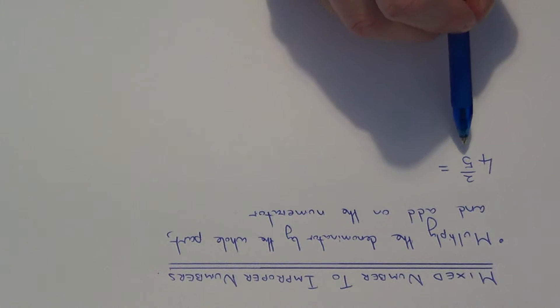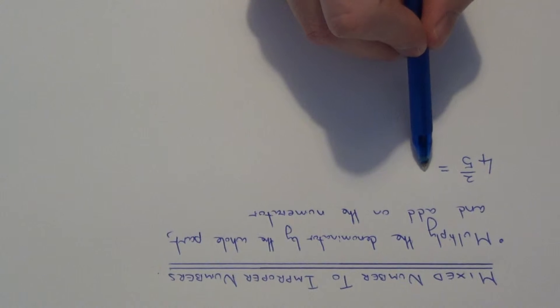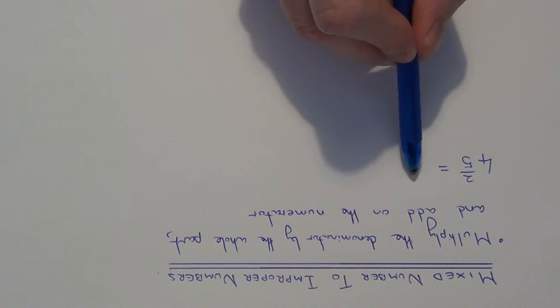To change your mixed number into an improper fraction, all you need to do is multiply the denominator by the whole part and add on the numerator. This will give you the numerator of your improper fraction.